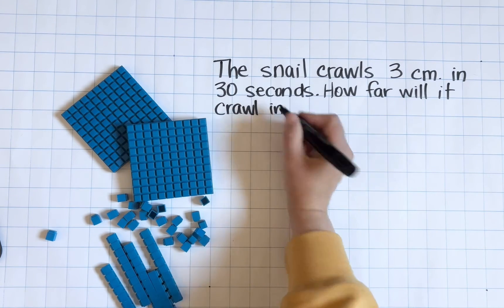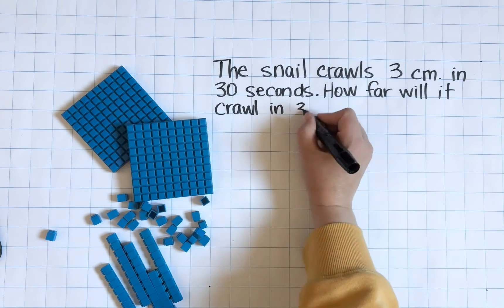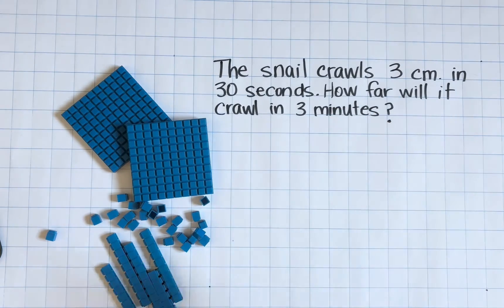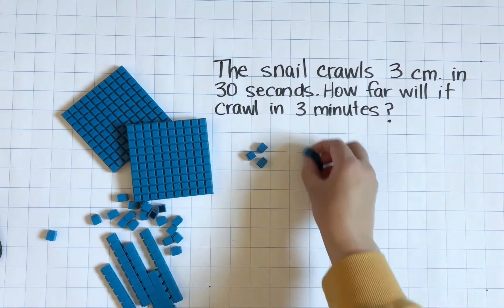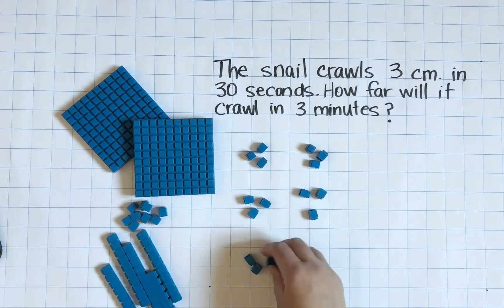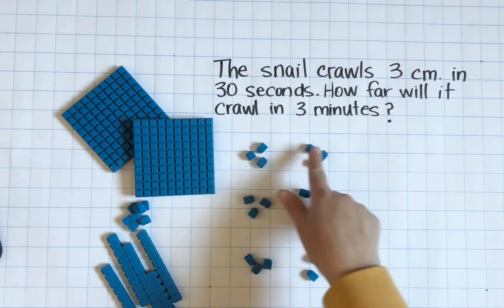Let's consider making manipulatives available to our students and asking them to use them to make sense of the problem. So here you'll see I'm going to use one base 10 block to represent a centimeter. I'm going to put them in groups of three centimeters and I know that each one of those groups represents 30 seconds.